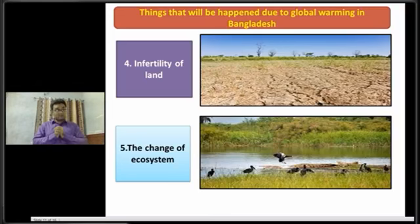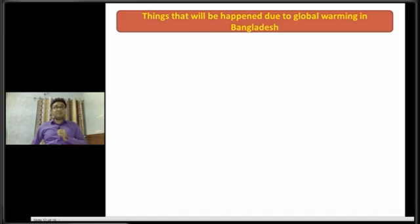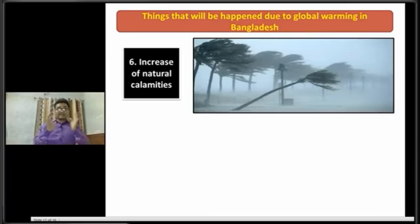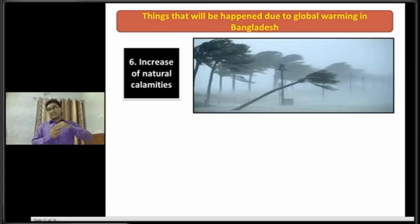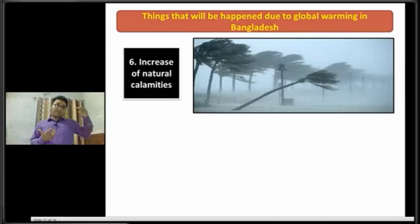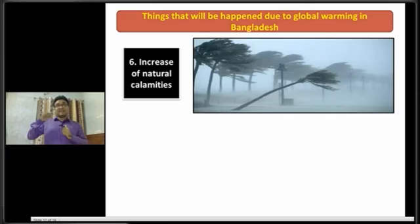Dear students, now I am going to discuss about the next impact, that is the increase of natural calamities. At first you have to understand what is called a natural calamity. Basically, a natural calamity is an unusual behavior of nature that may cause much harm and many deaths.